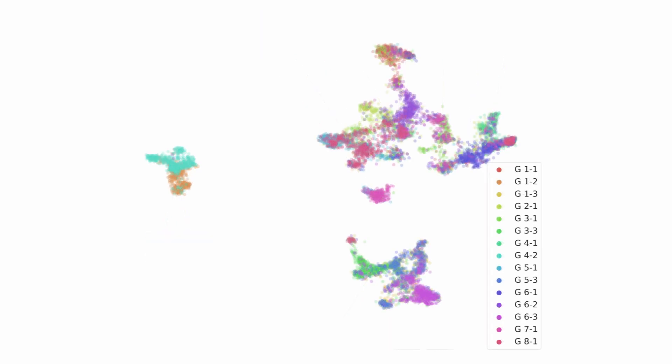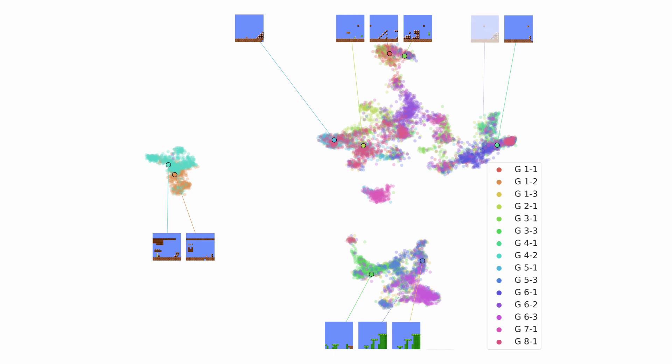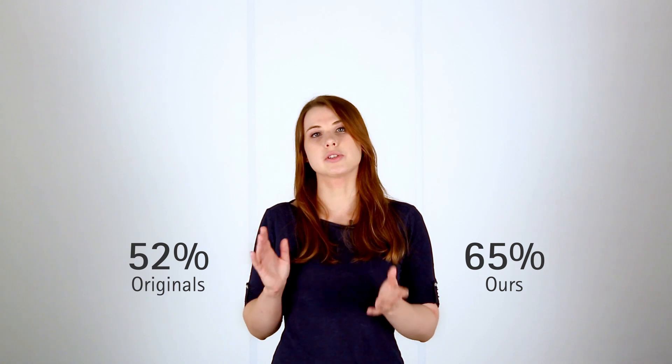Now, mapping all slices from our trained TOAD-GANs with the same transformation reveals that they map to the same areas as the original levels, keeping the level style they were trained on while showing some variants within. To put the variants in another perspective, we randomly picked 100,000 16 by 16 slices and found that about 91% of them were unique. This is all while the completability of the levels is comparable to the originals according to a state-of-the-art solver, the A-star algorithm.